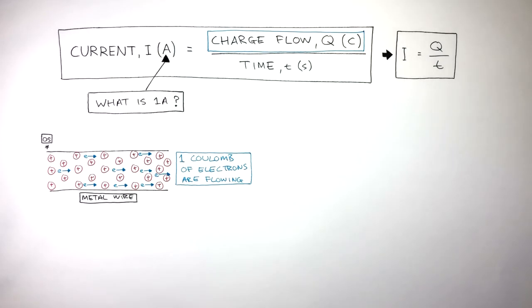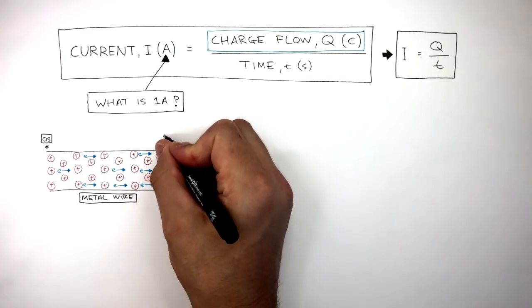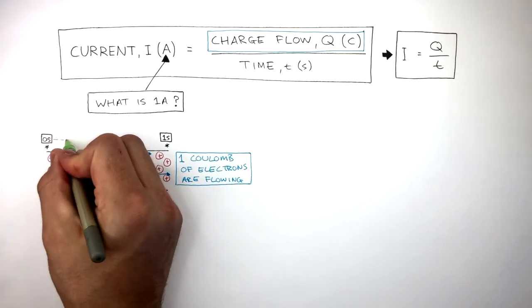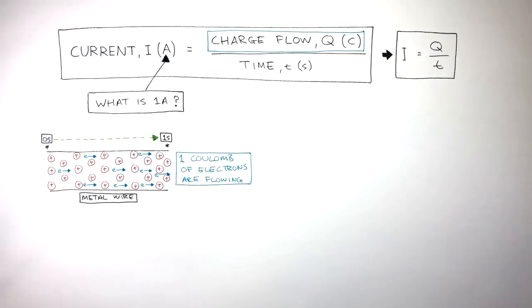This point represents 0 seconds and this point represents 1 second. So from 0 seconds to 1 second, this is how many electrons have flowed in 1 second. The 1 second it takes for the electrons to flow represents the time.